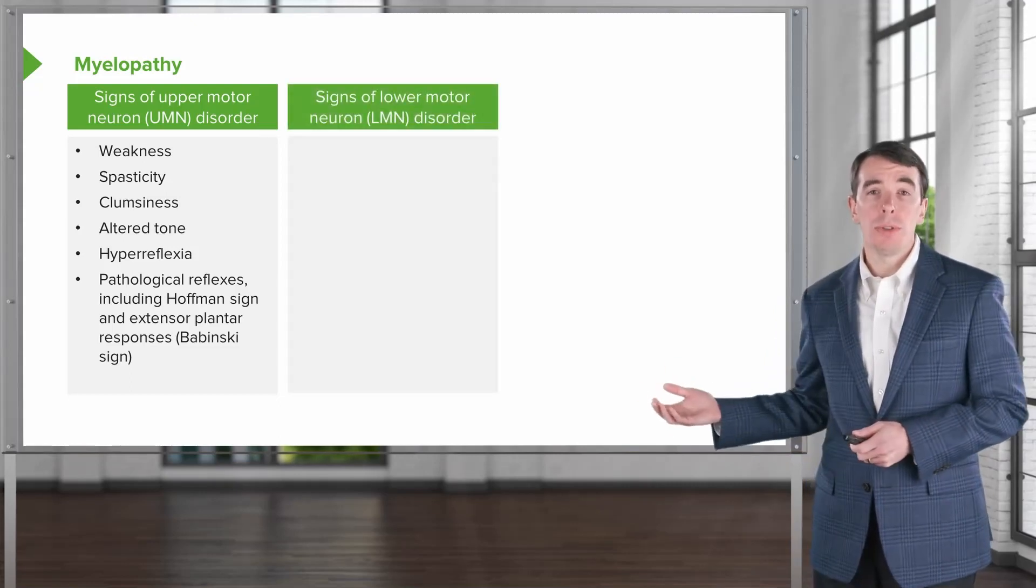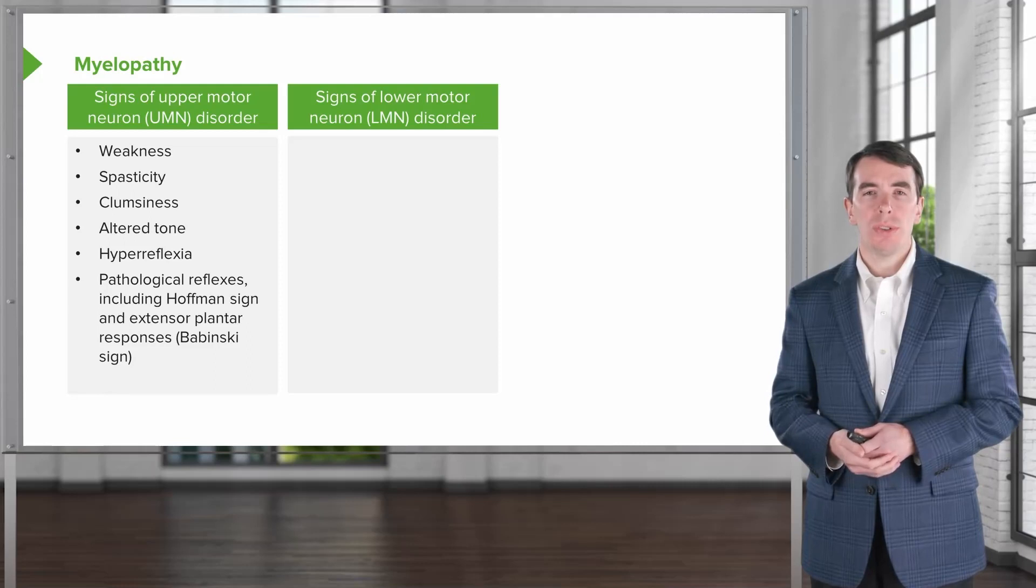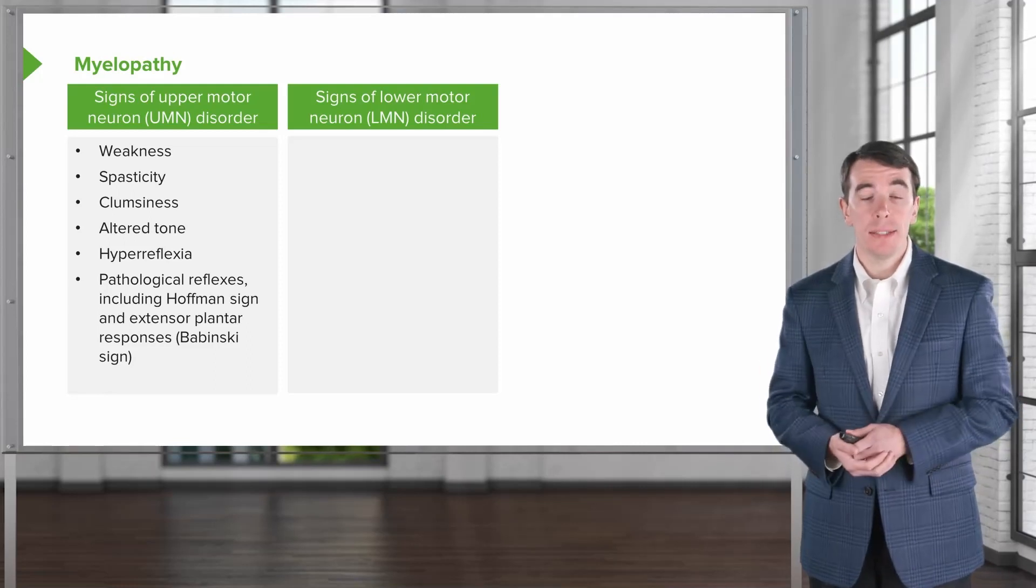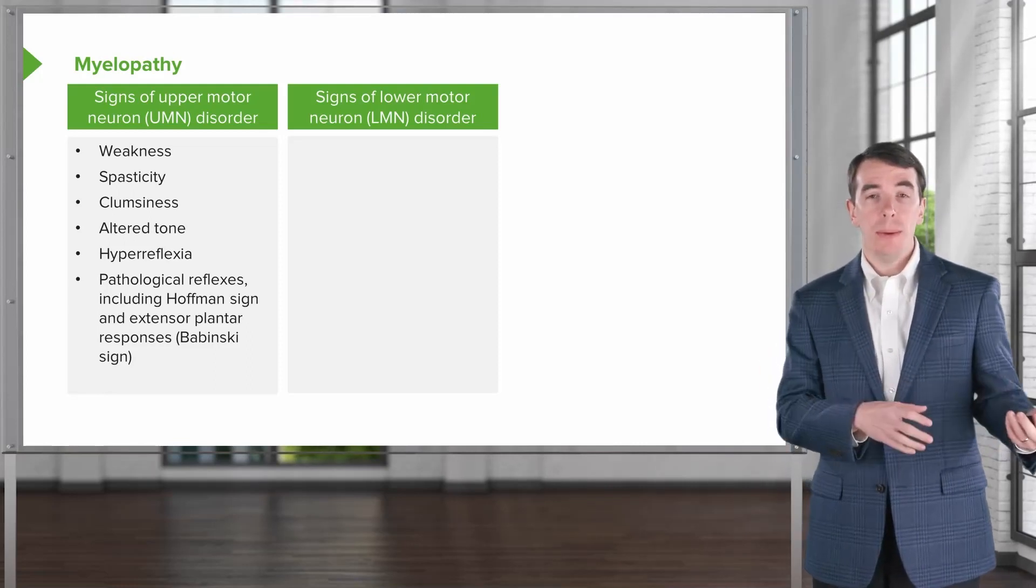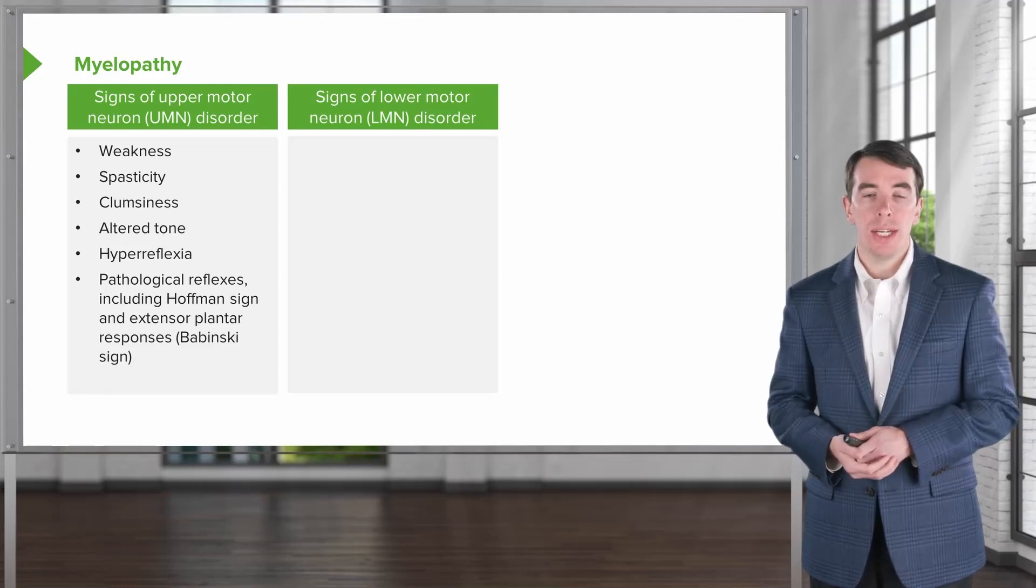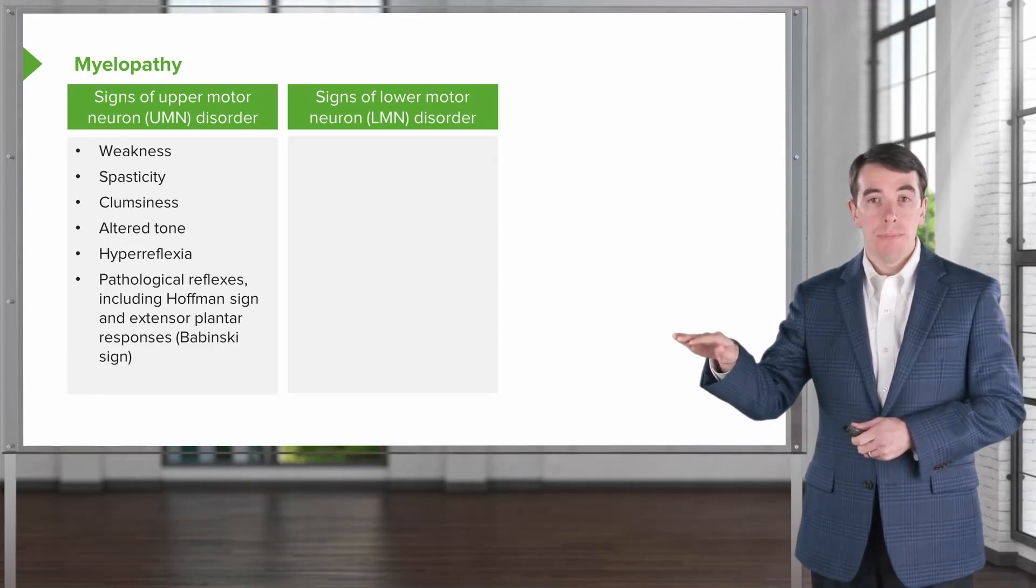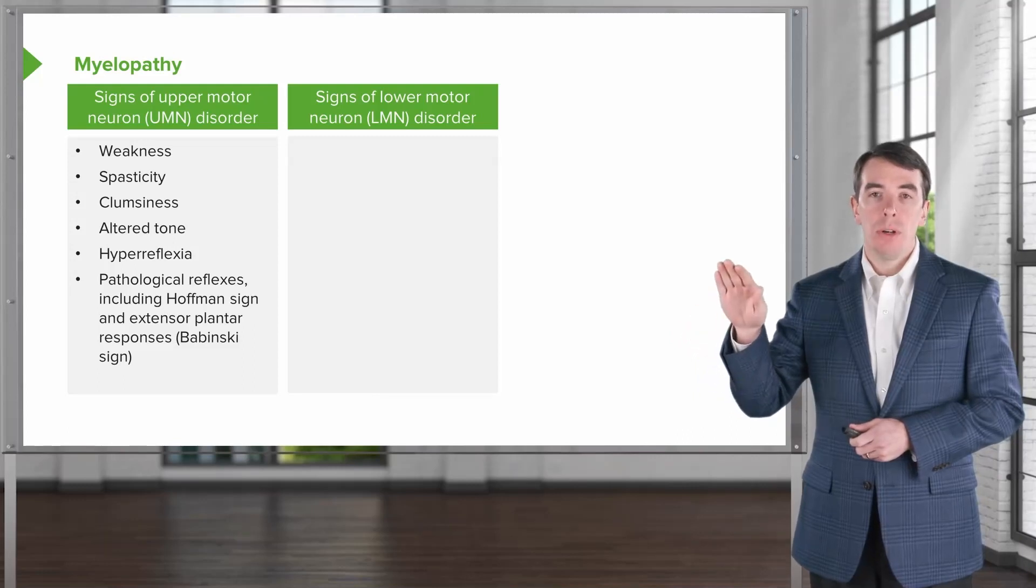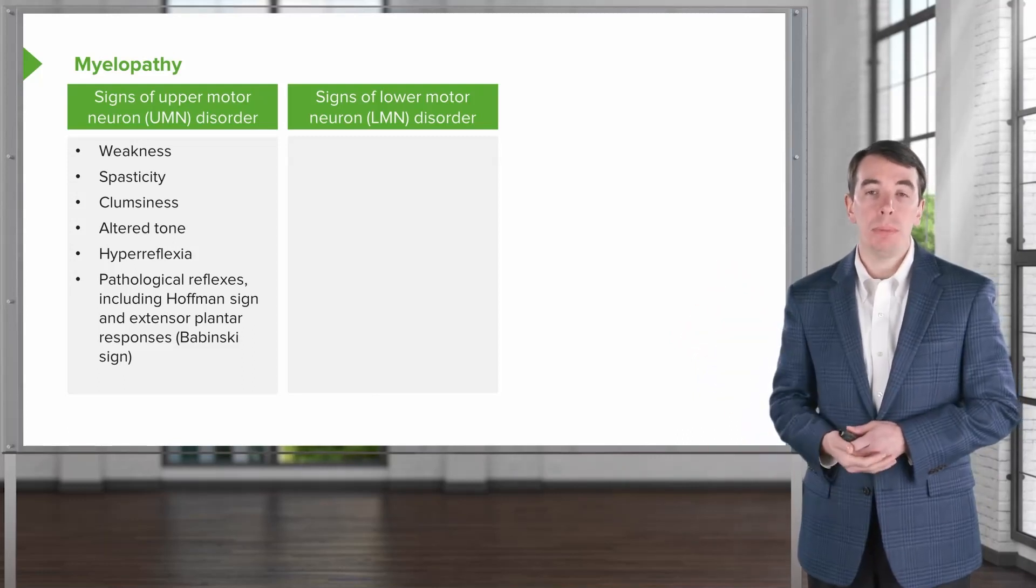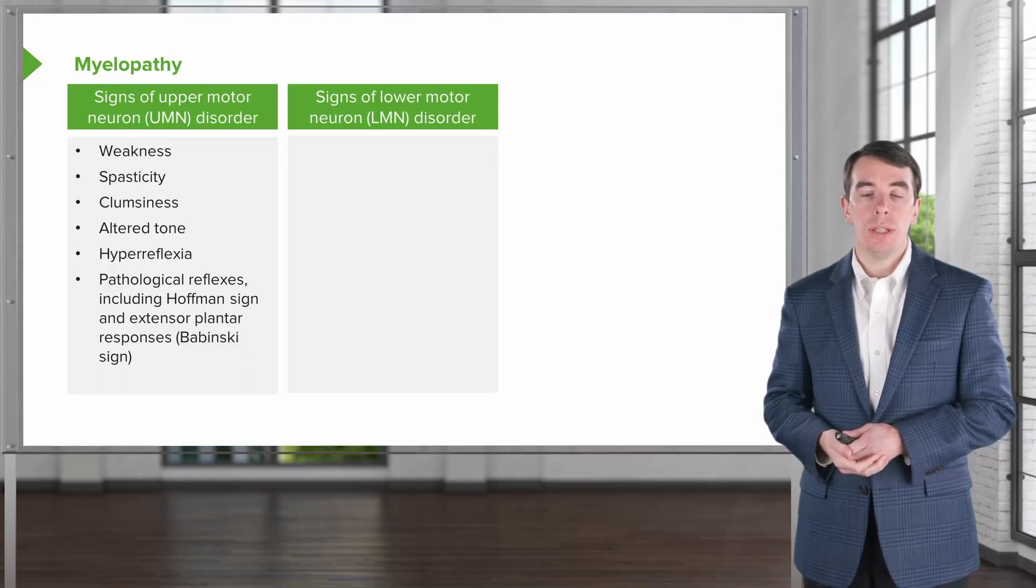We can also see lower motor neuron signs from spinal cord disorders, and this is where it gets a little bit complicated. We can see the combination of upper and lower motor neuron signs. The key is the lower motor neuron signs are at the level of the disorder and the upper motor neuron signs are below or distal to the level of the lesion.